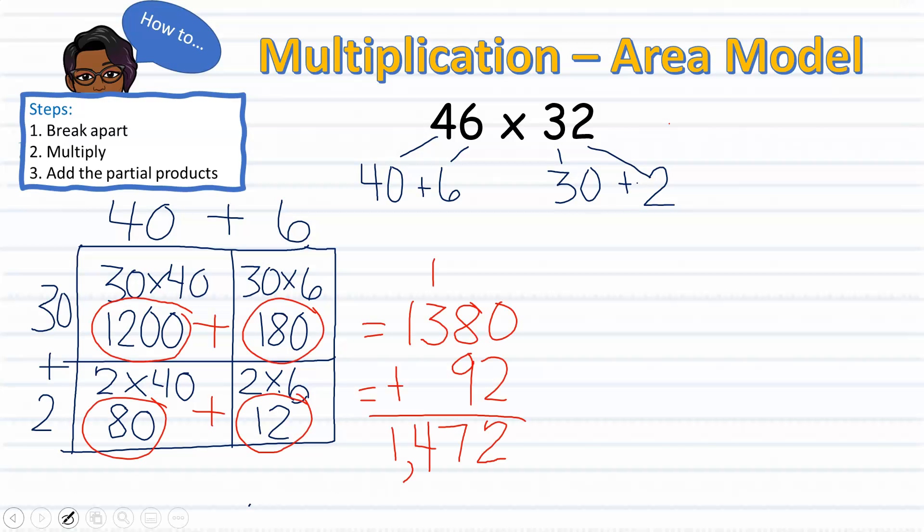After adding the partial products, I end up with 1,472. Therefore, I know that 46 times 32 equals 1,472.